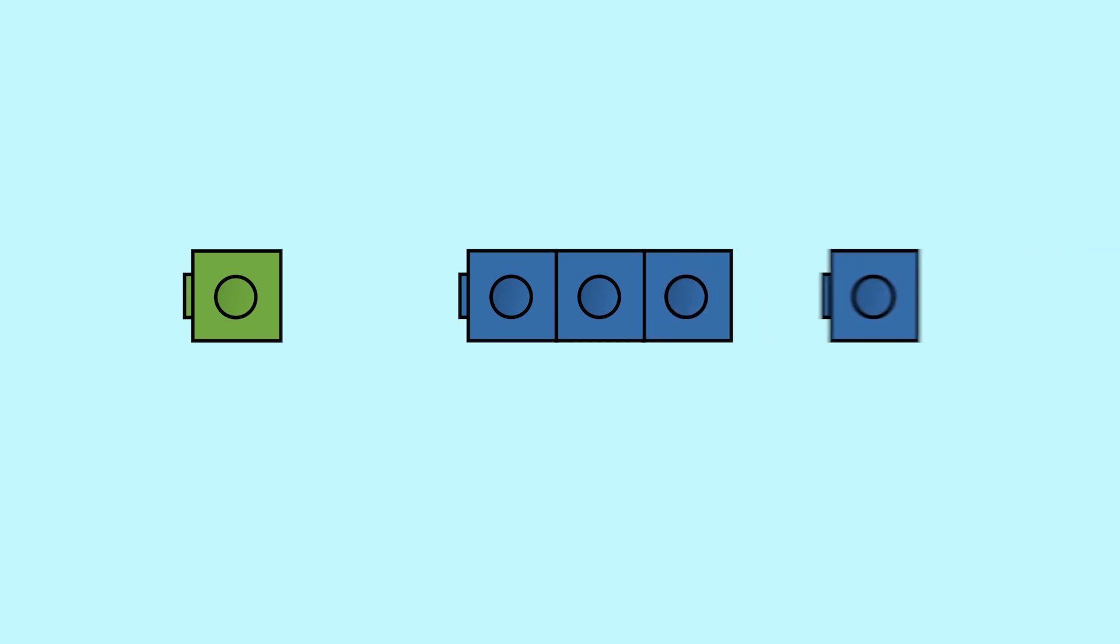Let's start with one snap cube. How many more snap cubes would we need to add to make 6? We can count on to find out. If we add another snap cube, we have 2, now 3, 4, 5, and 6. Now we have 2 parts that compose the number 6.